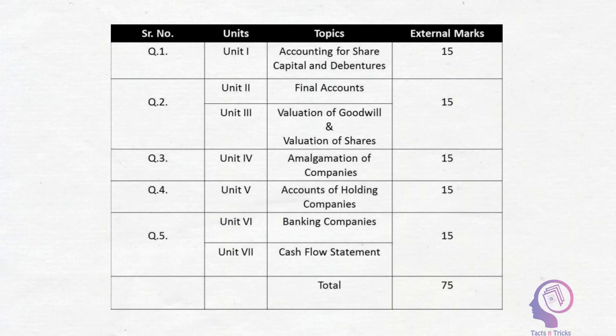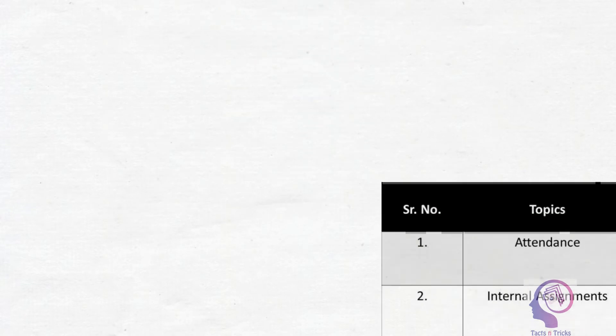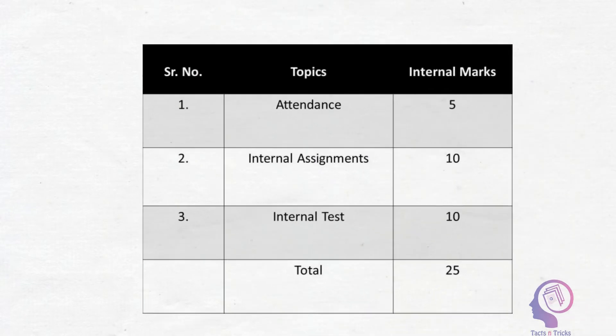Question 4 is again on Holding Companies — a compulsory question of 15 marks. Lastly, Question 5 is either theory or practical from Banking Company and practical or theory from Cash Flow Statement, with a total of 15 marks.